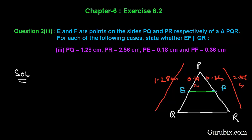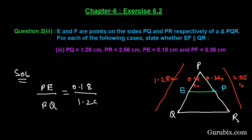First, let us find the ratio PE over PQ. This equals 0.18 over 1.28 cm. Since the number of digits in the decimal part of numerator and denominator are the same, we can cancel out the decimal point. Dividing both by 2, we get 9 over 64.